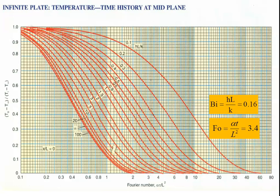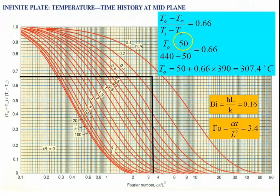To calculate the centerline temperature: Biot number is 0.16 and Fourier number is 3.4. For Fo = 3.4, draw a vertical line; it stops at Bi = 0.16, giving a temperature ratio of 0.66. So (T_O − T∞)/(T_i − T∞) = 0.66. T_O − 50 / (440 − 50) = 0.66. Therefore T_O = 50 + 0.66 × 390 = 307.4°C. The temperature at the center of the slab is 307.4°C.